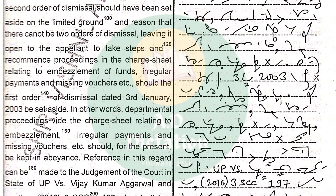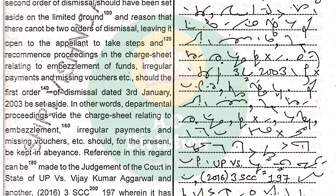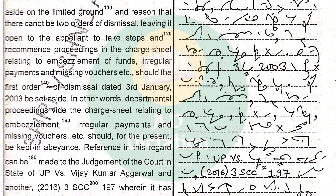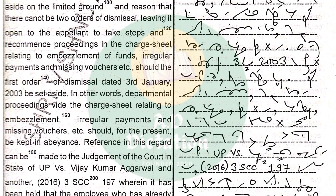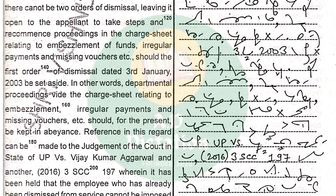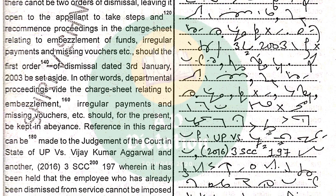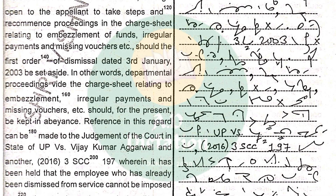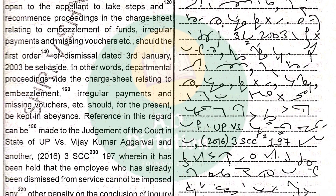In other words, departmental proceedings via the chart sheet relating to embezzlement, irregular payments, and missing vouchers, etc., should for the present be kept in abeyance.